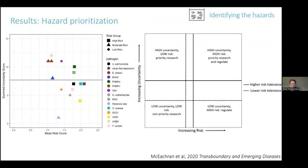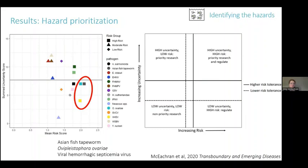That scoring gave us these results. On the right is a graph putting the relationship between risk and uncertainty on the page. The three pathogens that popped out as most important in our risk analysis were the Asian fish tapeworm, Ovivlejstophora ovariae (OVO), and viral hemorrhagic septicemia virus. There's also a cluster that includes infectious pancreatic necrosis virus, Aeromonas salmonicida, Yersinia ruckeri — some of these big salmonid pathogens that, although they didn't make our top three, are still important. Depending on where you drop that risk tolerance line, you might want to look at the top ten or top five.